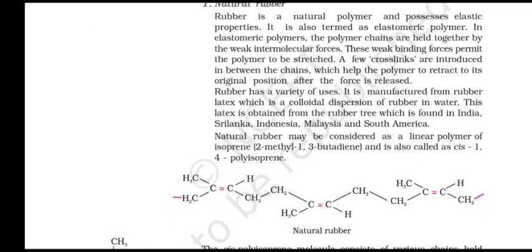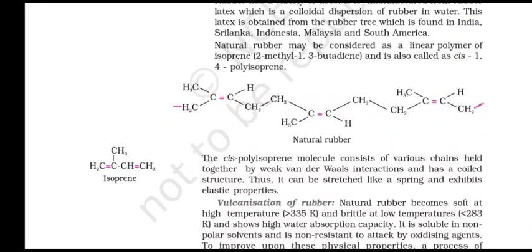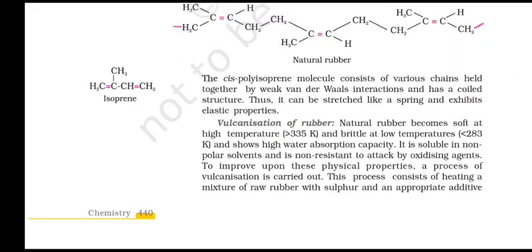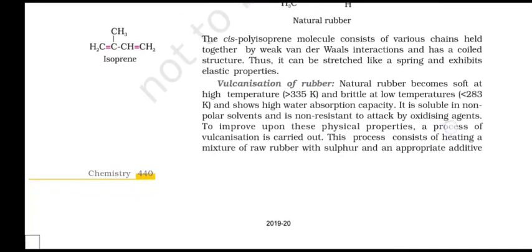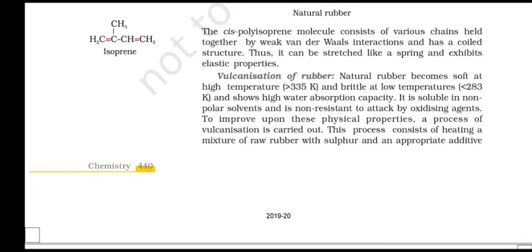Rubber: natural rubber is a natural polymer possessing elastic properties and is also termed an elastomeric polymer. In elastomeric polymers, the polymer chains are held together by weak intermolecular forces. These weak binding forces permit the polymer to be stretched. A few cross-links are introduced between the chains which help the polymer to retract to its original position after the force is released. Rubber is manufactured from rubber latex, which is a colloidal dispersion of rubber in water. This latex is obtained from the rubber tree found in India, Sri Lanka, Indonesia, Malaysia and South America. Natural rubber may be considered as a linear polymer of isoprene (2-methyl-1,3-butadiene) and is also called cis-1,4-polyisoprene. The cis-polyisoprene molecule consists of various chains held together by weak van der Waals interactions and has a coiled structure, thus it can be stretched like a spring and exhibits elastic properties.